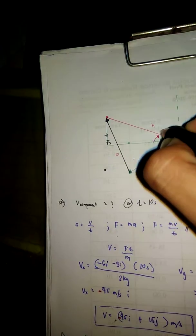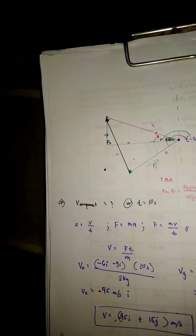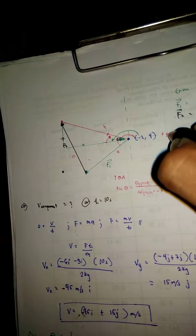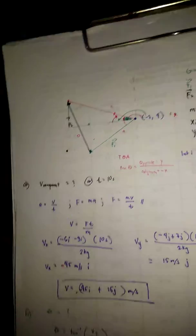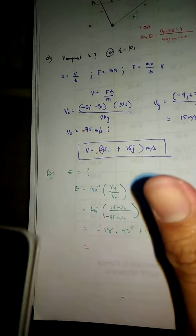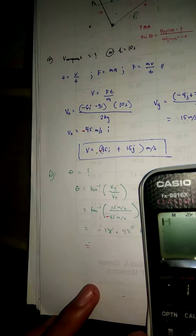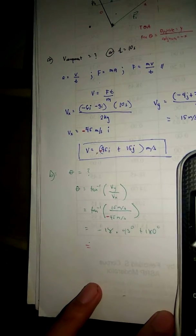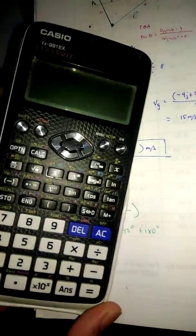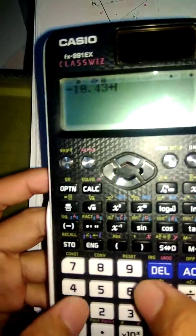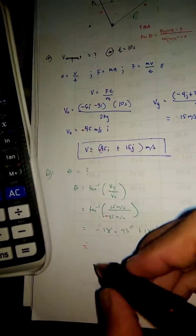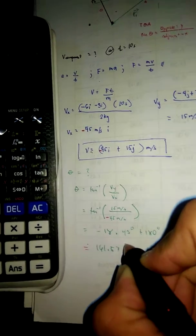That way we just get the pure angle over here, in reference with the positive x-axis. If we do the math here, the answer would be negative 18.43 plus 180 degrees. So the answer would be 161.57 degrees.